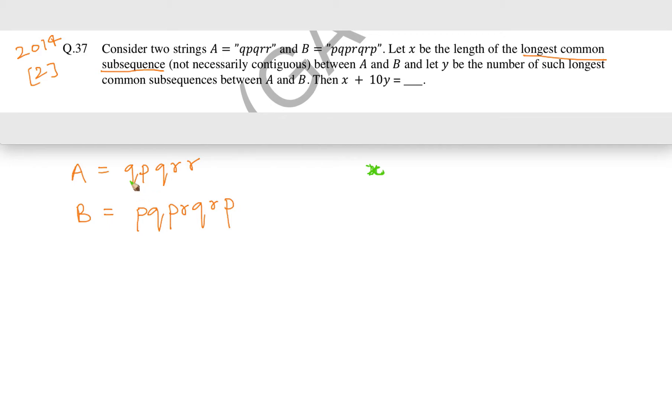Let us try. If we go Q, P, Q, then R, R—there are no two Rs in B. So definitely length 5 is not possible.